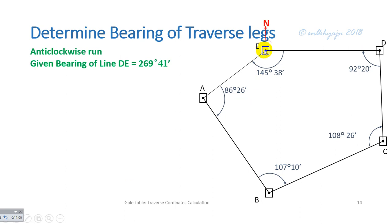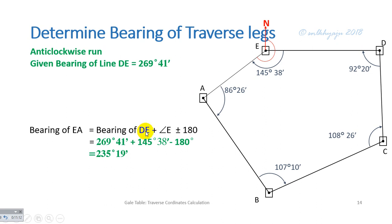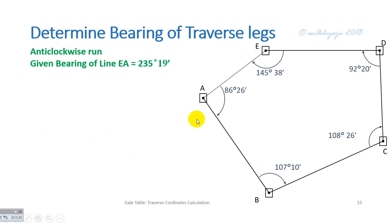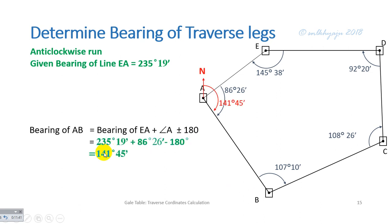Similarly, the bearing of EA is calculated as the bearing of the previous line DE plus angle E, plus or minus 180°, giving the bearing of EA as 235°19'. For the correction check, we finally calculate the bearing of AB from bearing EA plus angle A, plus or minus 180°, which should return the original bearing of 141°45', confirming the calculation is correct.